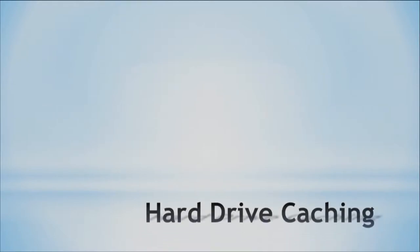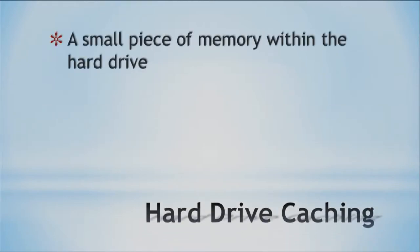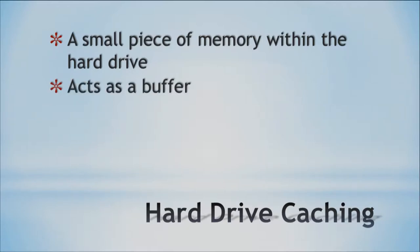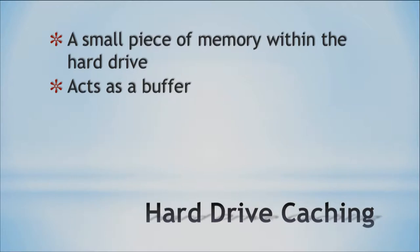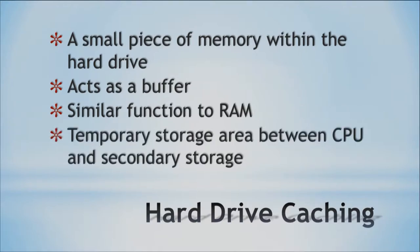So what is hard drive caching? Basically, we place a small piece of memory within the hard drive — a little bit of memory that acts as a buffer. This piece of memory is very fast. The hard drive writes to it, and then our computer reads from that buffer, so we can actually improve performance by having a larger cache. It has a very similar function to RAM, and it is temporary storage between our CPU and the secondary storage.